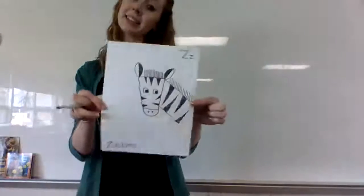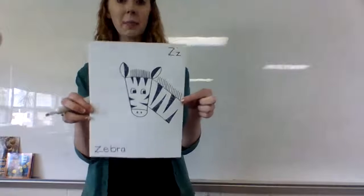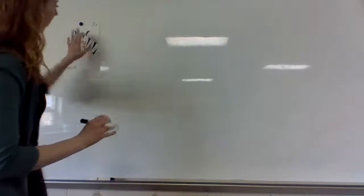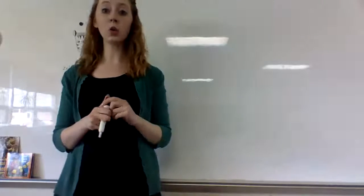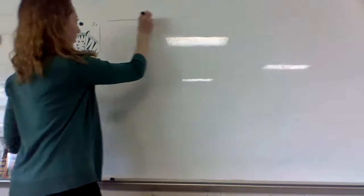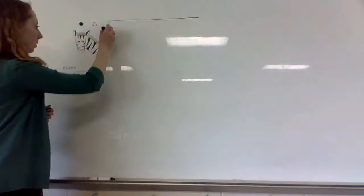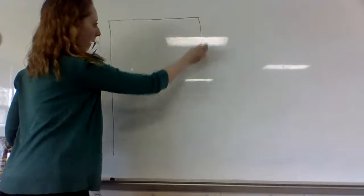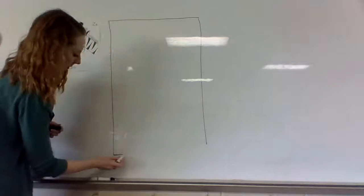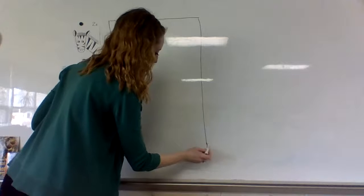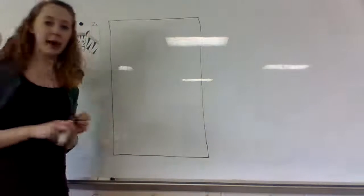Alright, today we are going to be making a zebra since we are finished learning about the letter Z. All you need is your white paper, your black crayon, and your watercolor paints. I'm going to draw your paper right here. We want it in front of us the tall way, and right now all you need is your paper and your black crayon.